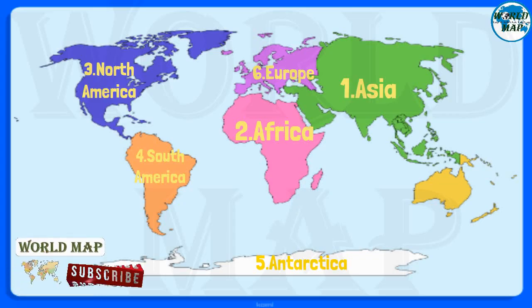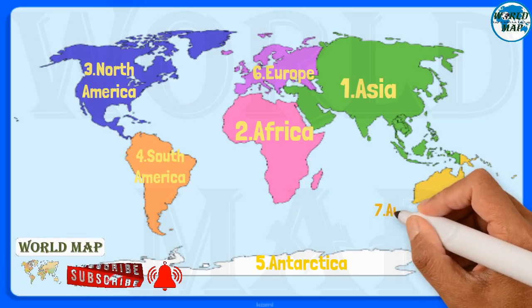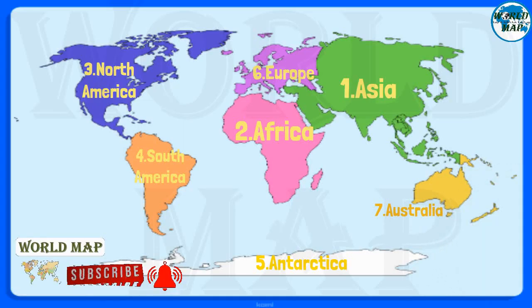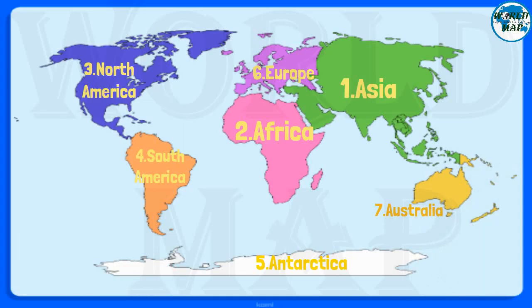Number 7: Australia. Australia is the smallest continent in the world and is the flattest and second driest after Antarctica. It is also the second least populated after Antarctica. It comprises 14 countries.